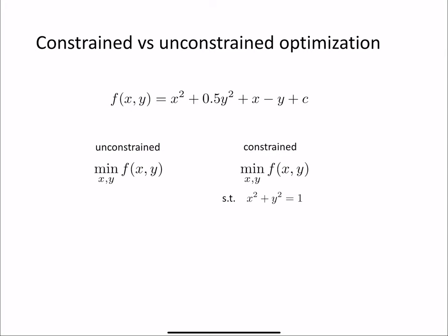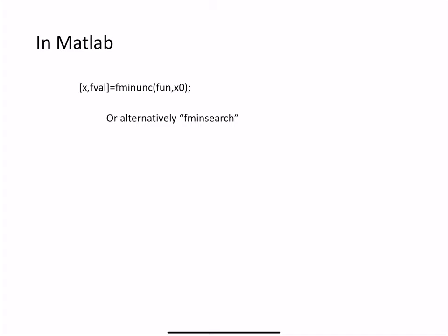To summarize: everything covered here applies to unconstrained optimization, where there are no restrictions on what values x and y can take. Constrained minimization — where variables must satisfy some equation, for instance lying on a circle — is more realistic in many settings but would require much more time to cover. In MATLAB, you can use fminsearch for unconstrained optimization, or the more generic fminsearch variant. Check the documentation to learn how to use these functions.